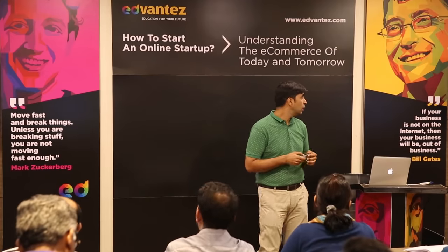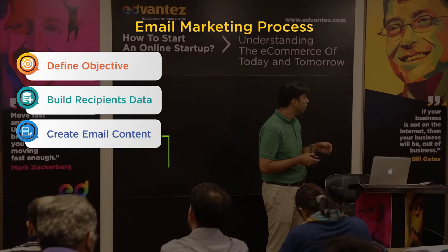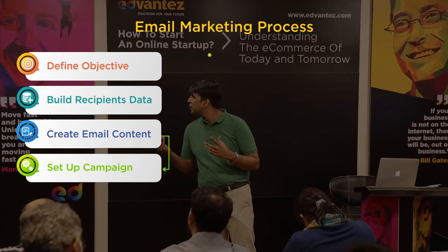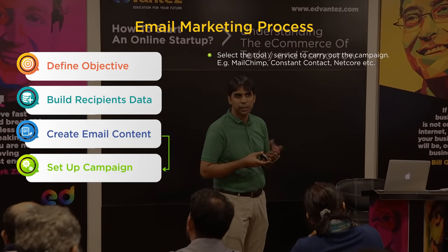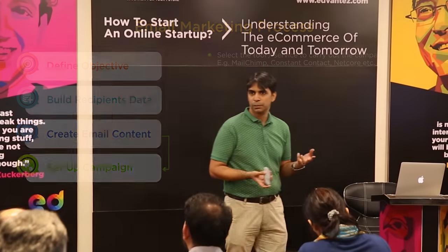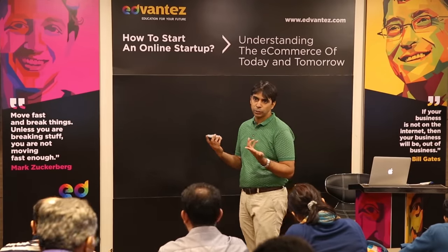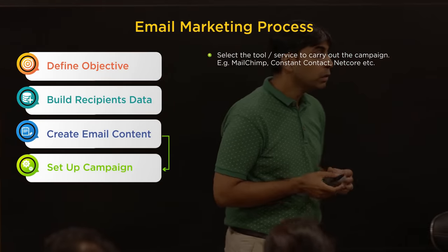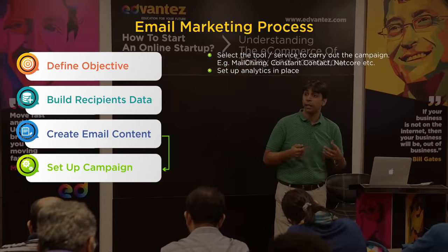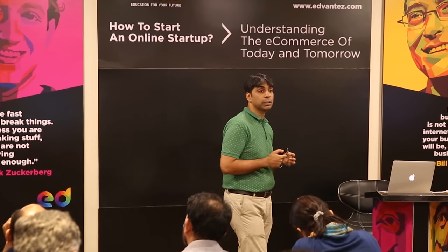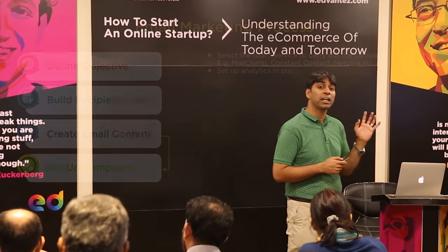The next step in the email marketing process is setting up the campaign. Platforms like MailChimp, Constant Contact, Netcore, and Octane are service providers that provide email services for a price, based on the number of sends. Make sure you set up analytics — we'll cover analytics more in the analytics module, but record everything so you can track all results.